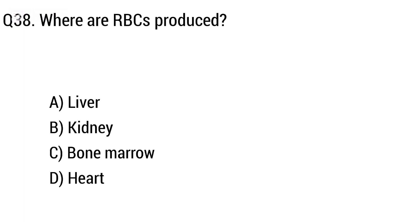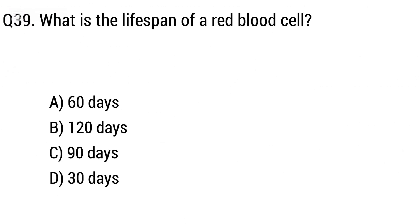Question 38: Where are RBCs produced? Option A: liver, B: kidney, C: bone marrow, D: heart. The right answer is option C, bone marrow.